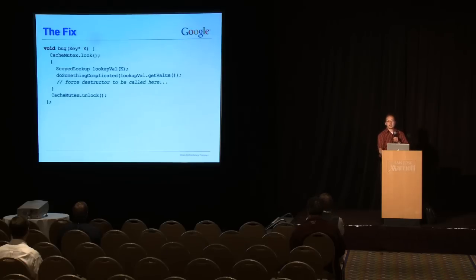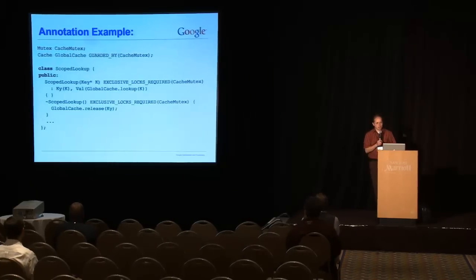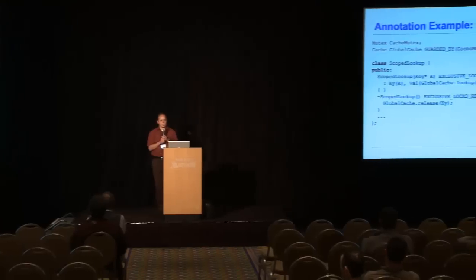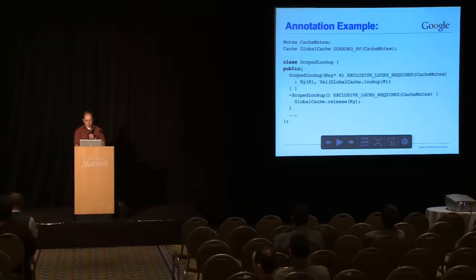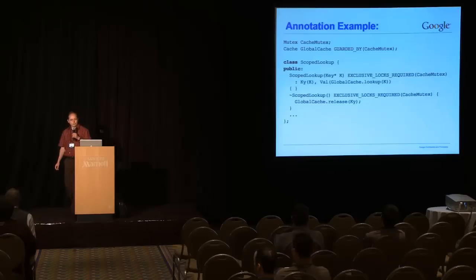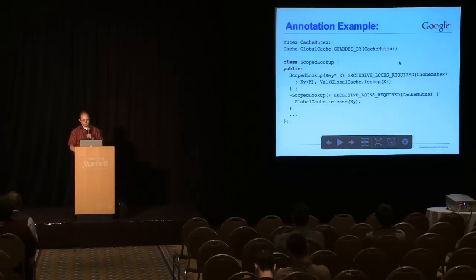Okay, so how do we find these kinds of things automatically with thread annotations? So we add some annotations. We say that we've got this cache mutex and a global cache, and these are actually related. So we add an annotation that says the cache is guarded by the mutex, using this guarded by keyword. And secondly, things which modify that cache now have to be annotated by stating that you have to hold the mutex before you can modify the cache.